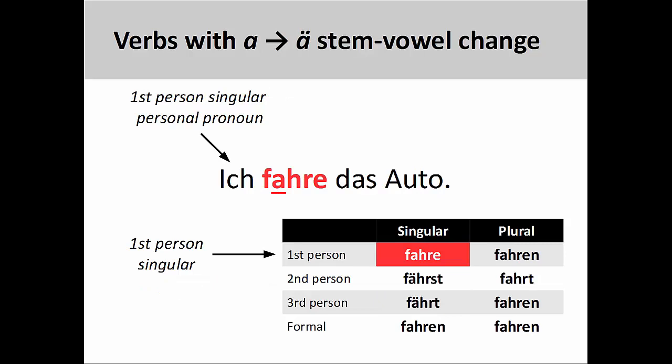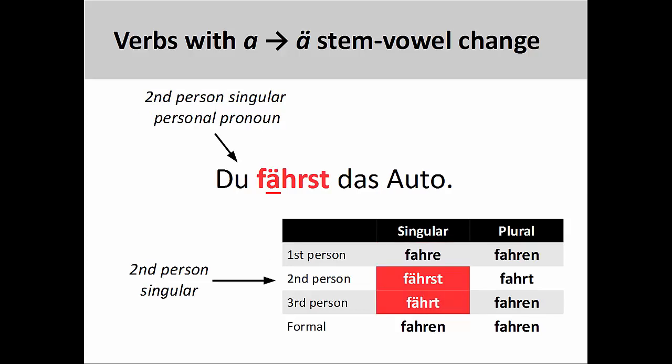The third group has a stem-vowel that changes from a to a umlaut. So although the first-person singular form of fahren would be fahre, as in ich fahre das Auto — I drive the car — the second-person singular form would be fährst, as in du fährst das Auto, you drive the car. The third-person singular form would also be fährt.